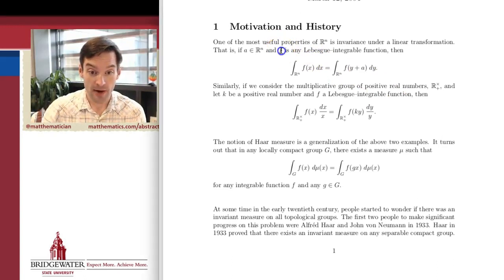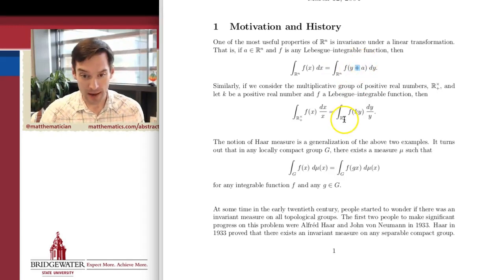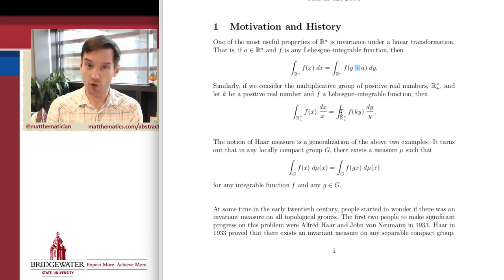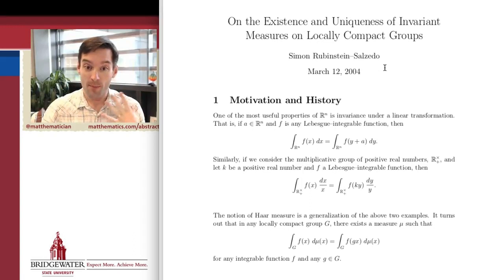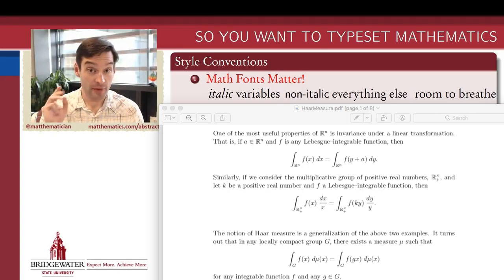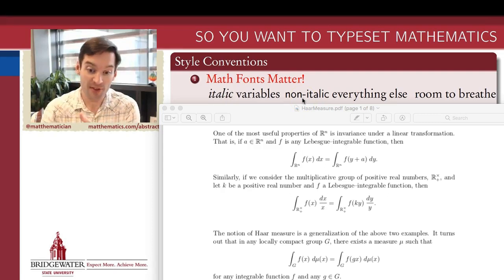The first observation is that anything which is mathematical is all set in a particular combination of fonts and styles that make it stand apart from the rest of the text. For example, this letter F, which is representing a function, is typeset in italics and all the text around it is not. Same thing with this A, that's a variable. But then this bold-faced R for the real numbers is not. All of your variables need to be set in italics.